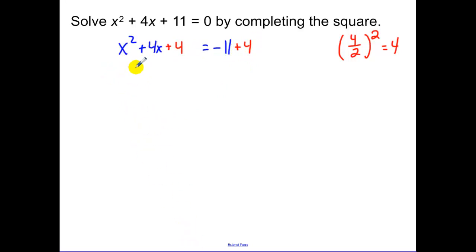Again, we've rigged the problem, so it has to factor to a perfect square. And then on the right side, we get negative 7. Now we square root both sides. So we get x plus 2 equals plus or minus square root of negative 7.